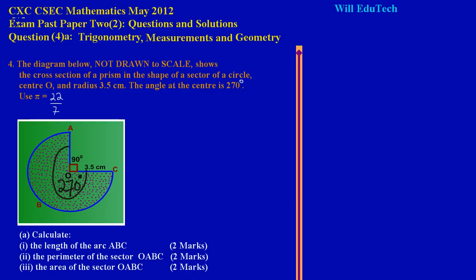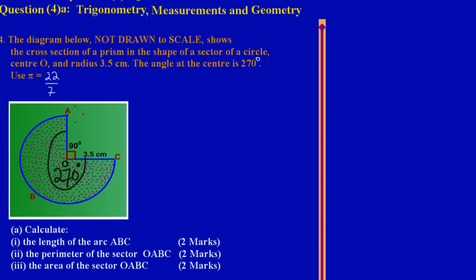Now here in part 1, they are asking us to calculate the length of the arc ABC. Now what do they mean by the arc? They are speaking about this distance here. An arc is a part of the circumference. And if you notice, this is not a complete circle — we have a part of it that is missing. So the arc ABC would be this portion of the circumference, from A, coming all around, and stopping at C.